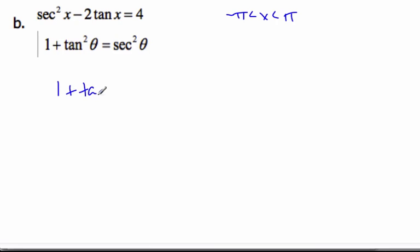So it's 1 plus tangent squared x minus 2 tangent x equals 4. Rearranging it: tangent squared x minus 2 tan x minus 3 equals 0, collecting my numbers.